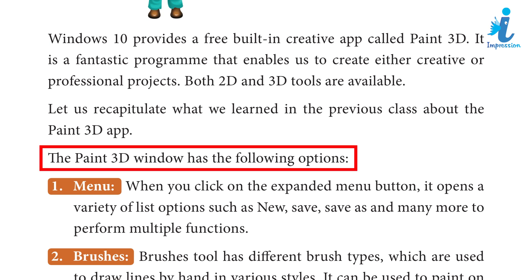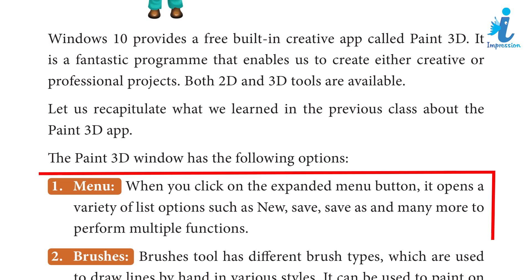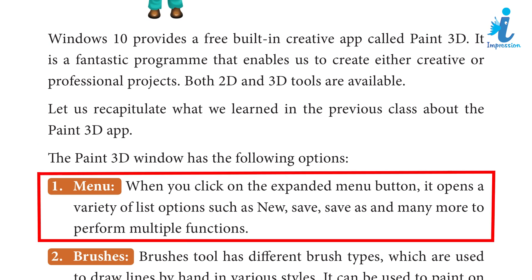The Paint 3D window has the following options. 1. Menu: When you click on the expanded menu button, it opens a variety of list options such as New, Save, Save As, and many more to perform multiple functions.